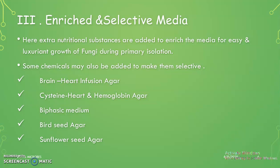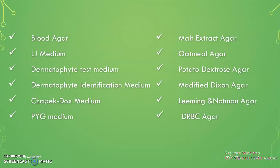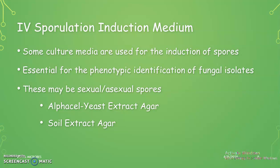In mycology, we can see several enriched and selective media. Important examples include: Brain Heart Infusion agar, Cysteine Heart Hemoglobin agar, biphasic medium, Bird Seed agar, Sunflower Seed agar, Blood agar, LJ medium, Dermatophyte Test Medium, Dermatophyte Identification Medium, Czapek-Dox medium, PYG medium, Malt Extract agar, Oatmeal agar, Potato Dextrose Agar (PDA), Modified Dextrose agar, and DRBC agar. These are used for the isolation of fastidious fungi.